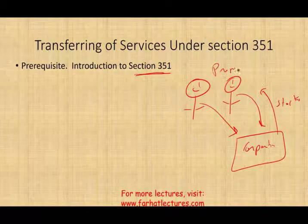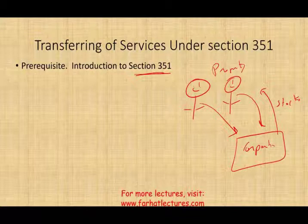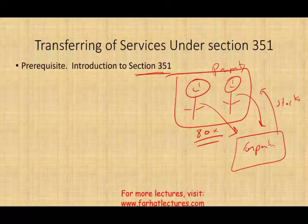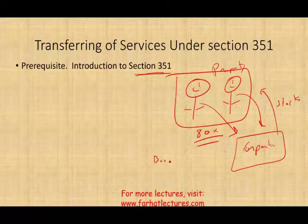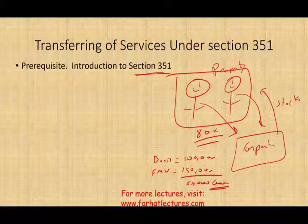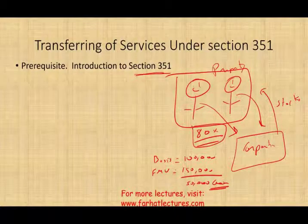When you transfer property and dispose of it, you generally have to determine if you have a gain or a loss. However, as long as you control 80% of the corporation after the transfer, there is no gain and no loss. So if the individuals contribute property with a basis of $100,000 but a fair market value of $150,000, technically there's a gain of $50,000 — but that gain is not taxable, because they did control the corporation.